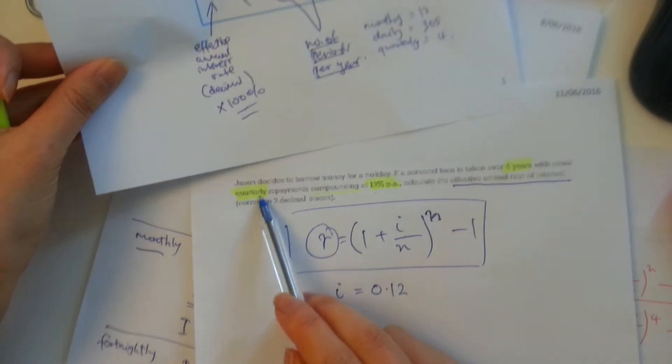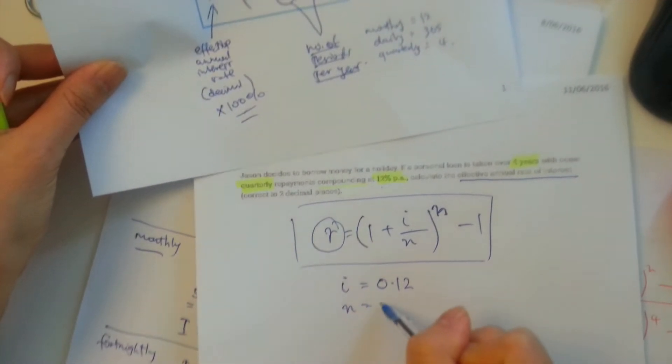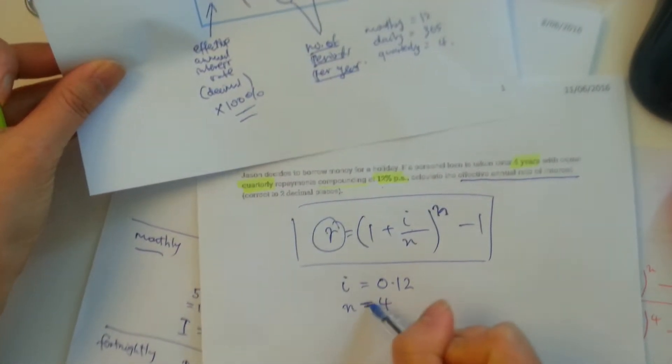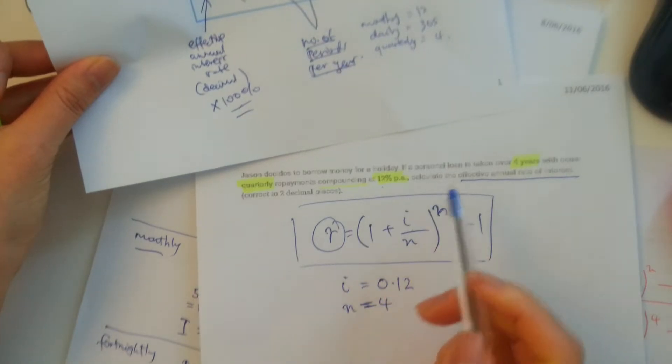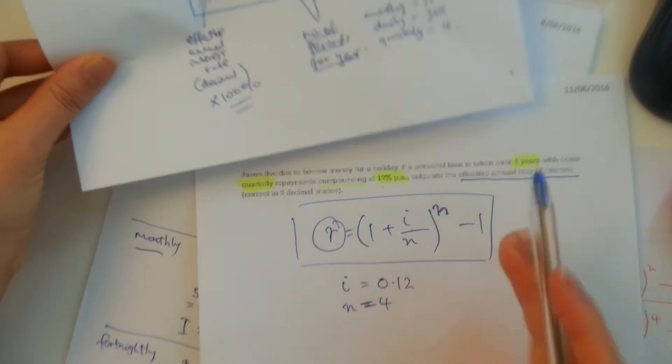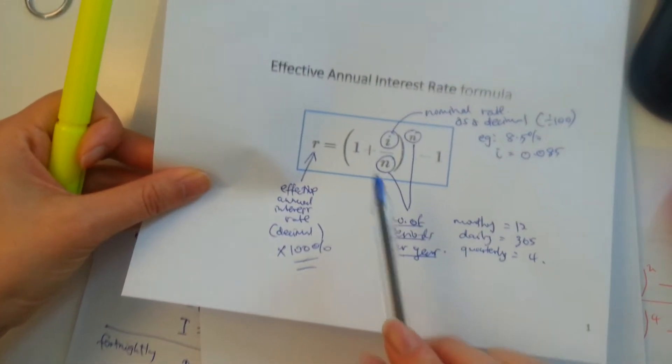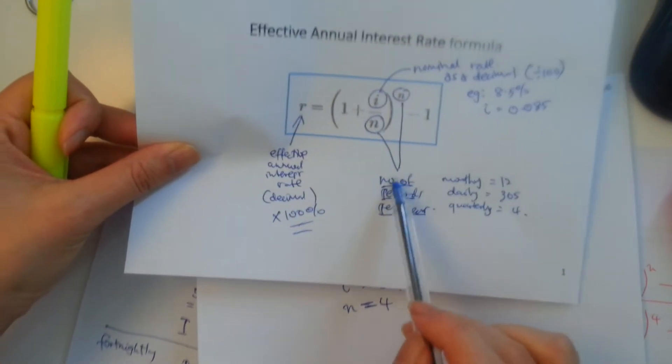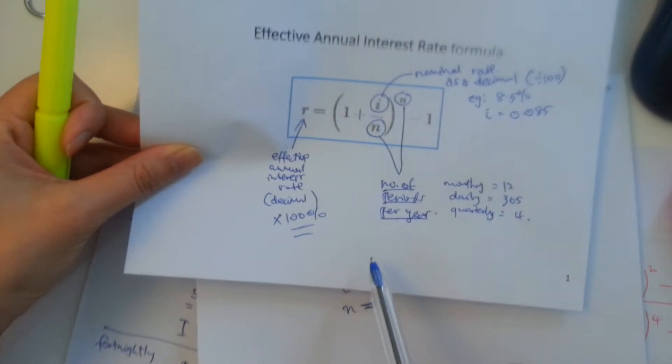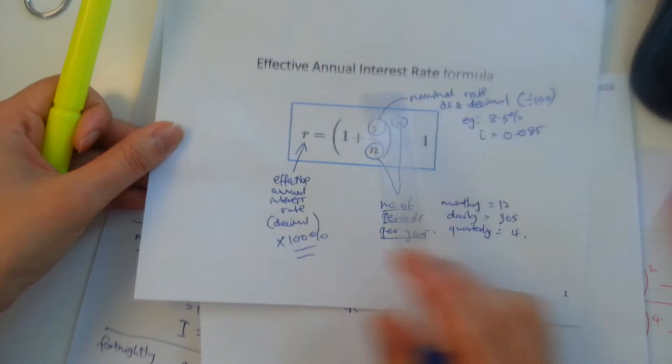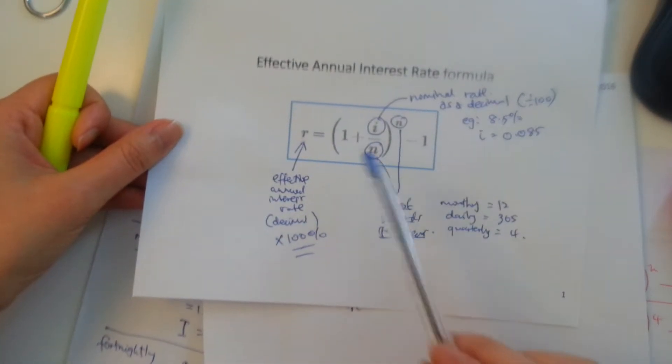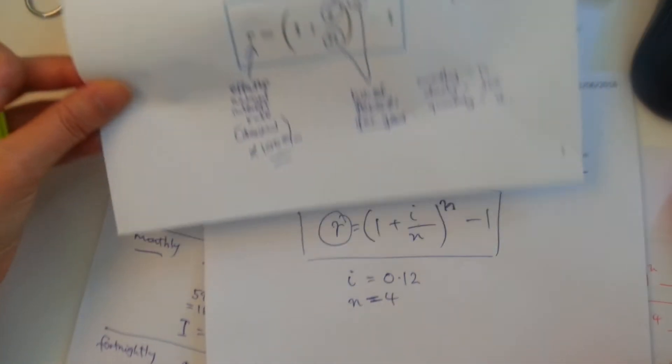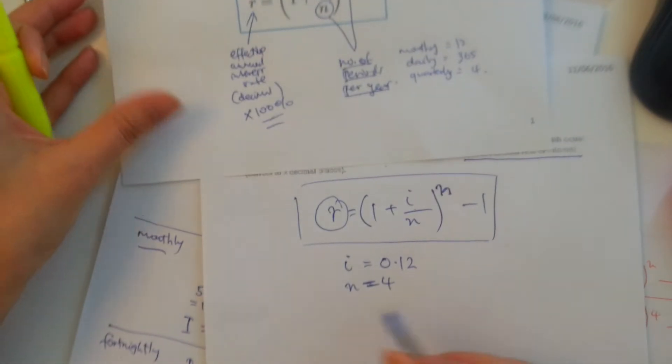So if it says quarterly, then our N is equal to 4. Isn't that confusing, because previously we learned that N is years multiplied by the number of periods per year, but in this case, you've got to remember that it just means number of periods per year. So that's why it's really good to have a very well-written summary book outlining all these for you.